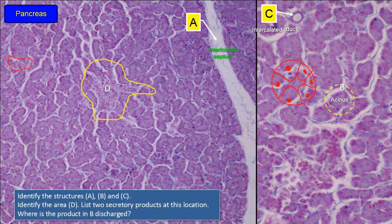This is therefore the pancreas, having both exocrine and endocrine components. The lighter-stained areas are the islets of Langerhans. Islet cells produce glucagon, insulin, and somatostatin, designated as alpha, beta, and delta cells respectively. However, these cells cannot be differentiated from each other by conventional stains. Since the islets of Langerhans are the endocrine part, there is no duct associated with them — the cells secrete their products into the blood via a rich network of capillaries.